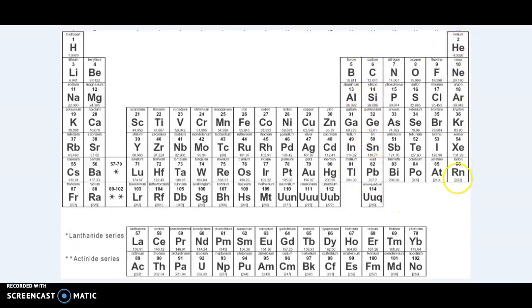These guys are all perfect. They have eight in the outside shell. They don't do anything. So they don't bond or they don't become charged. These guys all have seven in the outside shell. They want eight. So they'll gain one more electron, which makes them all have a negative one charge.